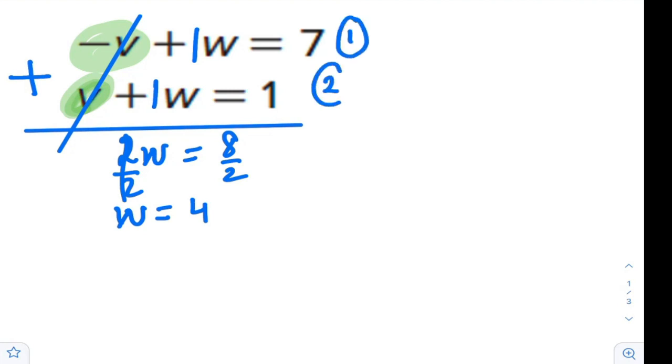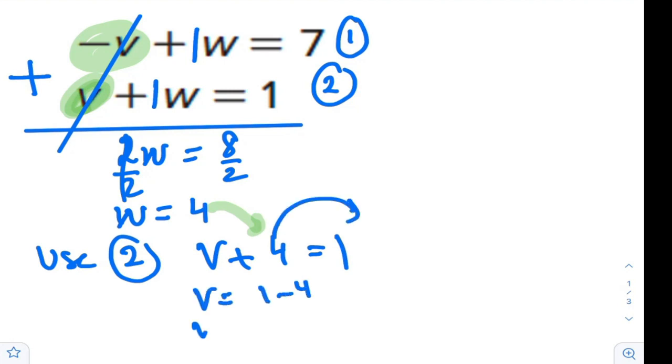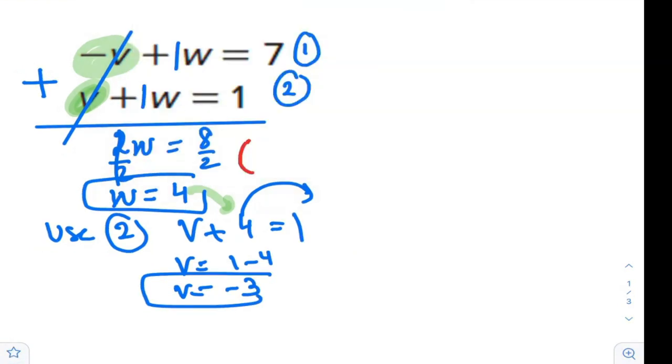Now how can we get the v now back? Use one of those equations to replace. I will choose the second one. If I'm using the second one, which is v plus w equals 1, simply I will replace the value of w by the value 4 that I have gotten before. So v is 1 minus 4, which is negative 3. So now the values are ready, and the solution will be negative 3 and 4.